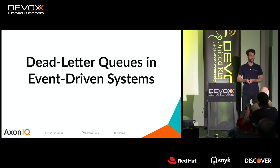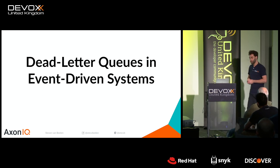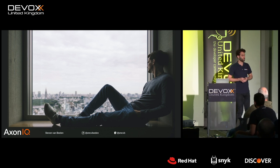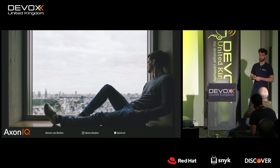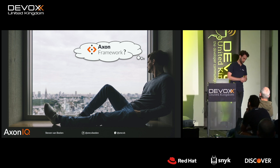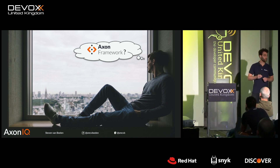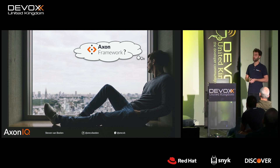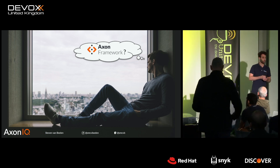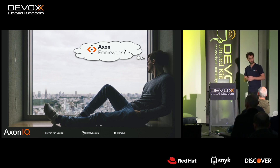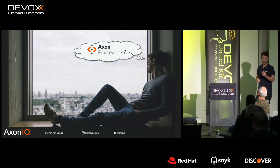I'm going to talk about dead letter queues and event-driven systems, as is clear from the title. A short bit about myself: I'm Steven, from the Netherlands, and I work for Exonic. I'm the lead developer for Axon Framework — a Java-based open source library that provides building blocks for message-driven architecture inside your monolith or microservices, supporting CQRS, domain-driven design, and event sourcing.